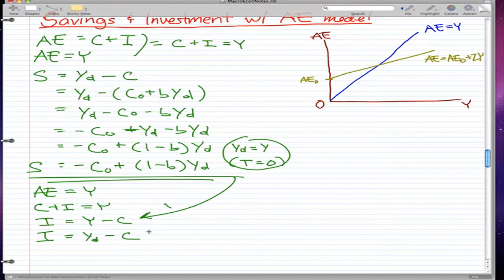So this is pretty much this. So essentially what I'm saying here is that I is equal to S. And that's how we connected everything from savings to investments to AE model.